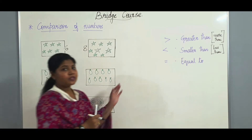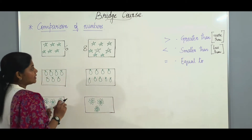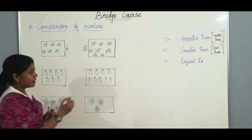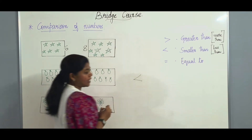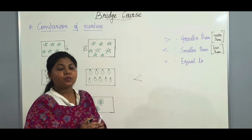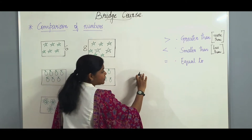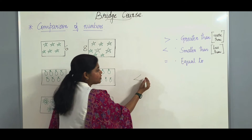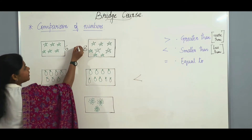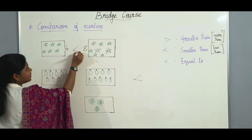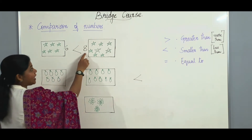So we will be using the greater than sign. To remember the greater than sign, let us remember this as the mouth of a crocodile. The crocodile always wants to eat something more, so the side which is open is always on the greater side. Here the crocodile is eating the number 8.